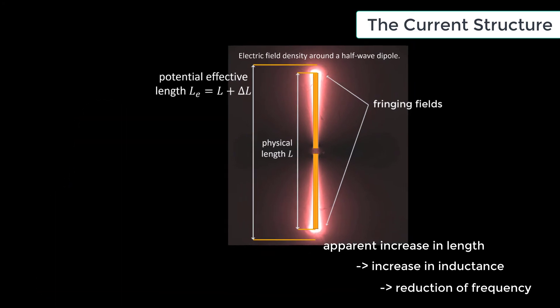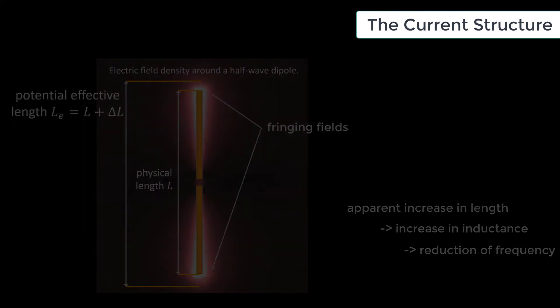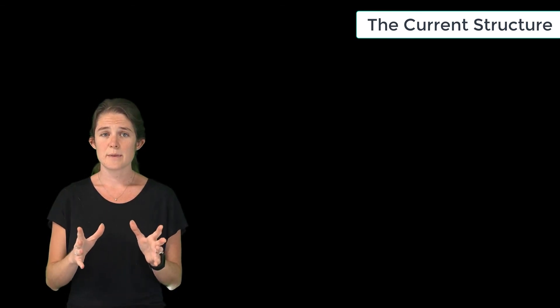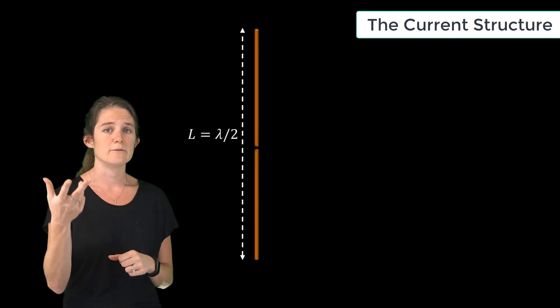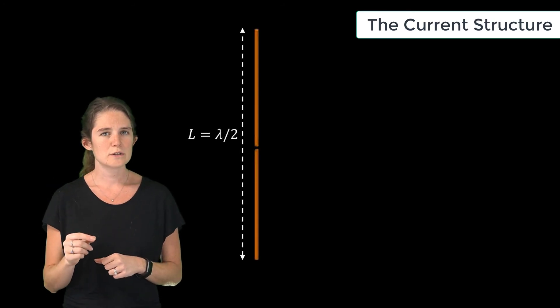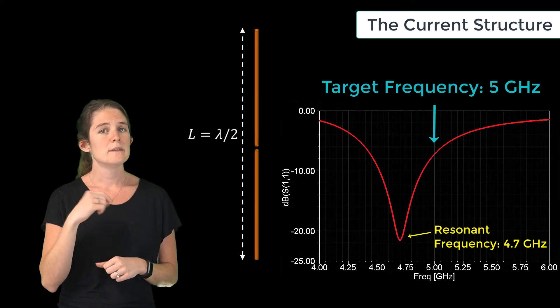So a typical design path for a dipole antenna begins by designing and simulating the antenna with a half wavelength, but this will result in resonance below the target frequency of operation.